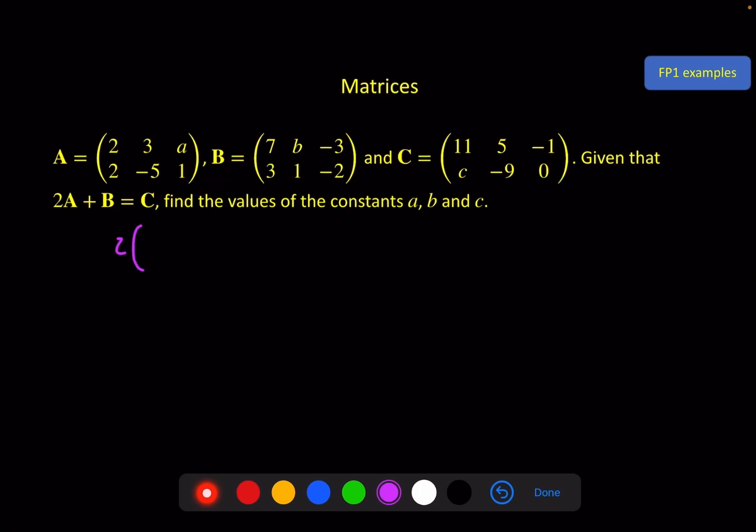So they're telling us that 2 lots of 2, 3, a, 2, minus 5, 1, plus 1 lot of B, 7b, minus 3, 3, 1, minus 2, is equal to C.